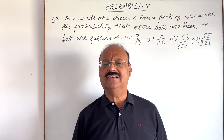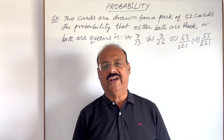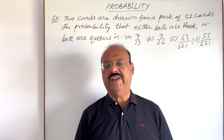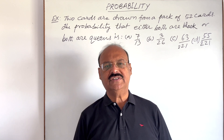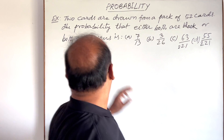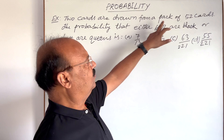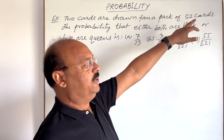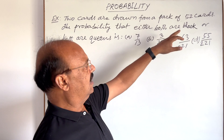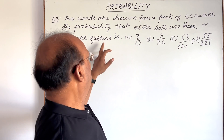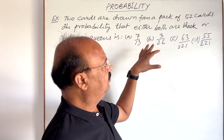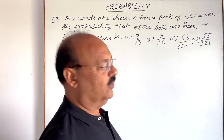Welcome students, let us see a very interesting and important question from the topic probability. This topic is very important for competitive examinations as well as class 11 and 12. The question is: two cards are drawn from a pack of 52 cards; the probability that either both are black or both are queens. Four options are given and we have to select the correct one.